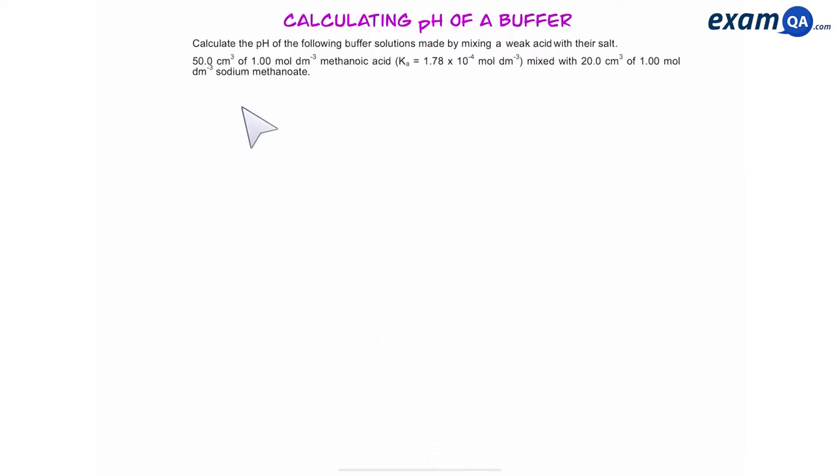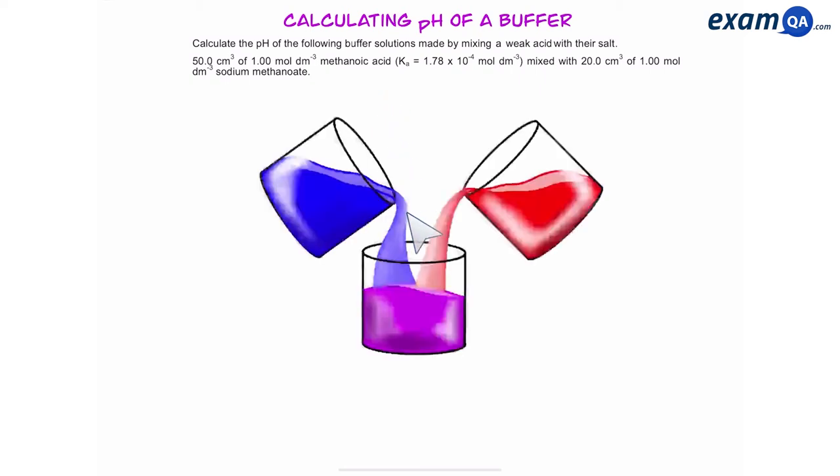So let's do a practice example. Calculate the pH of the following buffer made by mixing a weak acid with its salt. So let's see if we can draw this out and see what's going on. Remember to calculate the pH of a buffer we're going to use the formula Ka equals H+ times A- over HA. We are then going to rearrange it to work out the value of H+.